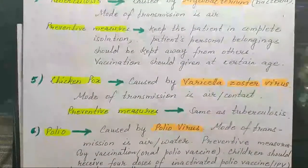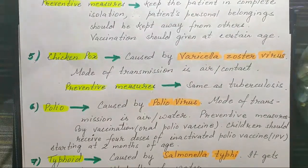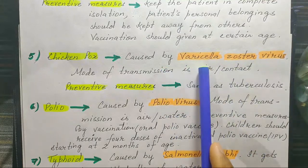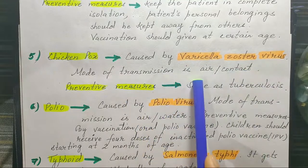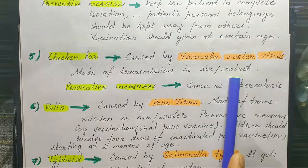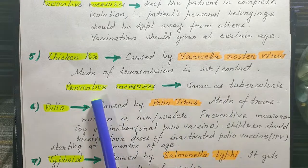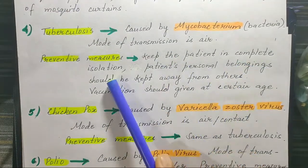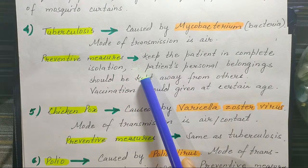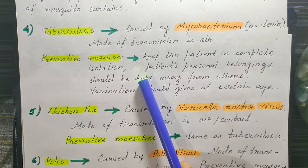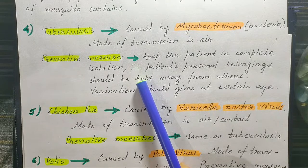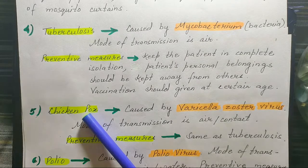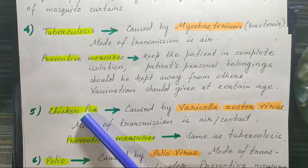Chicken pox is caused by a virus called Varicella zoster virus. The mode of transmission is through air and contact with other persons or their belongings. Preventive measures include keeping the patient in complete isolation. Neem leaves and neem paste are applied on the body of the patient when suffering from chicken pox.